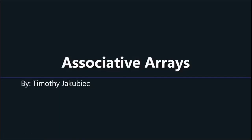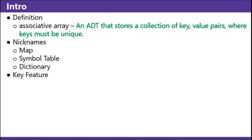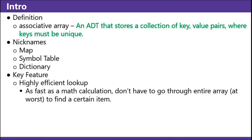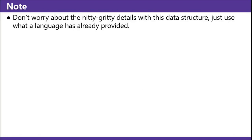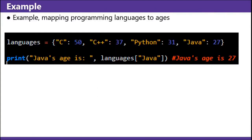Hello and welcome back to Jakubication. This is a video on associative arrays. An associative array is an ADT that stores a collection of key-value pairs where keys must be unique. Nicknames: Map, Symbol table, Dictionary. Key feature: highly efficient lookup — as fast as a math calculation, you don't have to go through the entire array at worst to find a certain item. Don't worry about the nitty-gritty details with this data structure — just use what a language has already provided. Do not implement your own associative array. Example: this maps programming languages to ages in Python. C to 50 years old, C++ to 37 years old, Python to 31 years old, Java to 27 years old. Then you access the dictionary with the Java key and you get back Java's age.